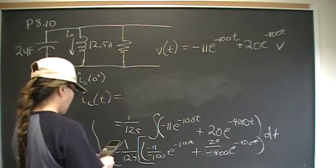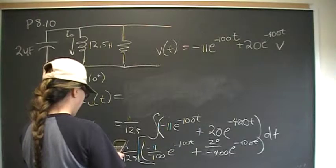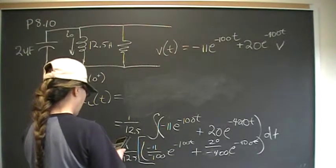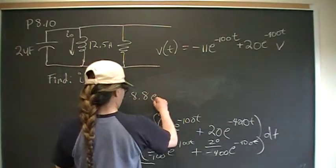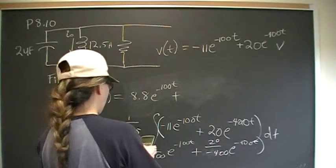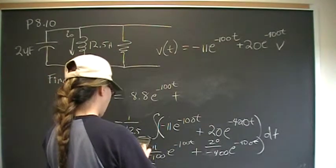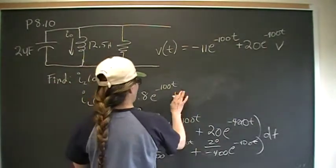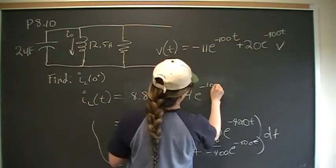So we go 11 divided by 12.5 times 100, that gives me 8.8e to the negative 100t, and 20 divided by 12.5 times negative 400. This becomes minus 4e to negative 400t.